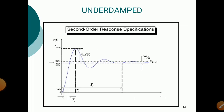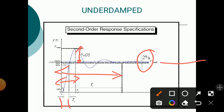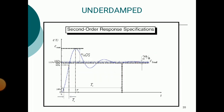For the underdamped system, the second order response specifications are shown on a graph. The maximum overshoot (OS) is indicated, percentage OS is written, the entire settling band is the settling time, the initial rise portion is rise time, and the time to first peak is peak time. The ±2% band is the steady state error.